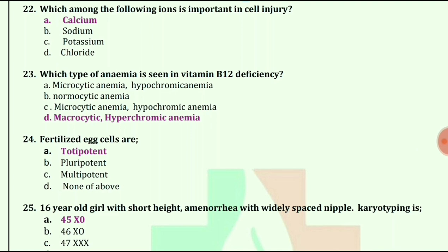Which type of anemia is seen in vitamin B12 deficiency anemia? The answer is macrocytic hyperchromic anemia.